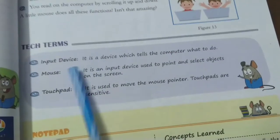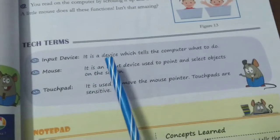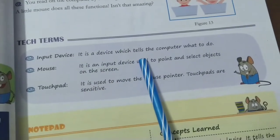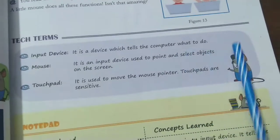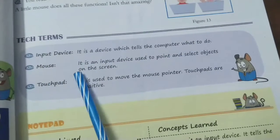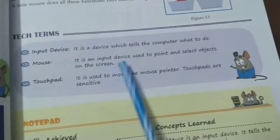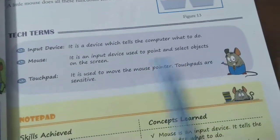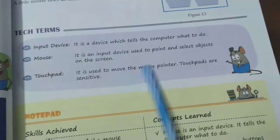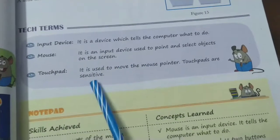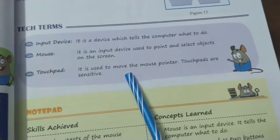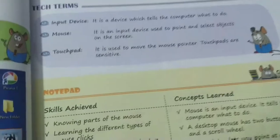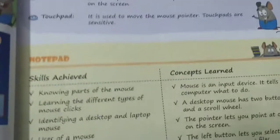Tech terms. Input device: it is a device which tells the computer what to do. Mouse: it is an input device used to point and select objects on the screen. Touchpad: it is used to move the mouse pointer. Touch pads are sensitive to touch.